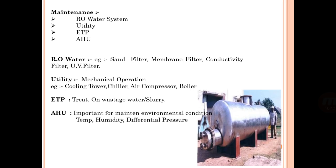Maintenance in the industry covers the RO water system (sand filter, membrane filter, conductivity), utilities such as mechanical operations — cooling tower, chiller, air compression, and boilers — ETP (effluent treatment plant) for treating wastewater and slurry, and AHU (Air Handling Unit) which maintains environmental conditions like temperature, humidity, and differential pressures.